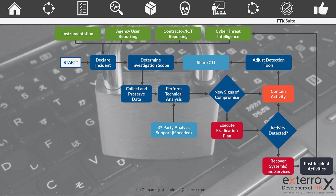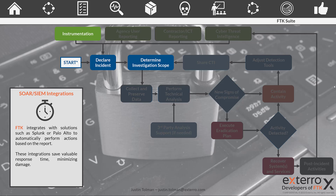Let's start with the playbook here. We'll shade out and highlight different areas and talk about the aspects of FTK that will work with these different areas of the playbook. Before the incident happens, we have instrumentation like SOAR and SIEM solutions. Once they detect something and an incident starts to occur, we're going to declare an incident and determine the investigation. FTK is not a perimeter defense tool, so you're going to need that — you probably already have it within your infrastructure.